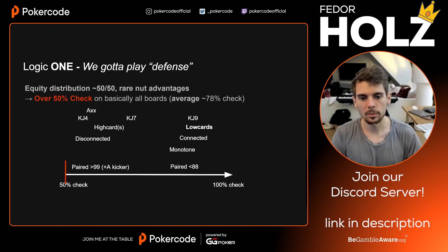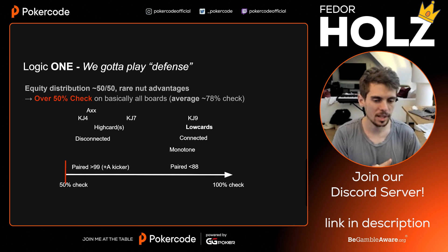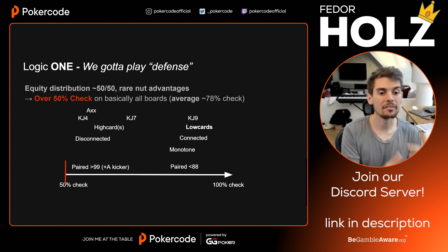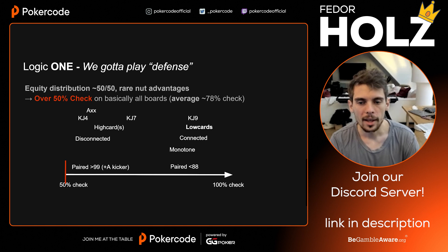One interesting thing: if we look at something like king-jack boards, king-jack-four gets bet quite a lot, king-jack-seven gets bet less, and king-jack-nine gets bet almost none of the time. This gives you an idea of how high cards connect to disconnection and where there are some drivers — there are some high card boards that are very connected where connection then becomes the stronger driver to be checking more.